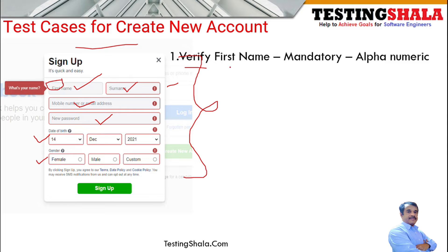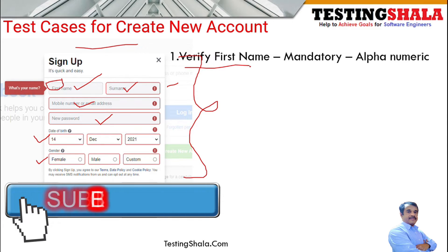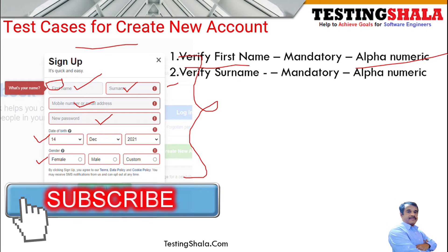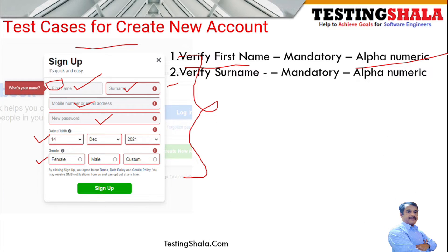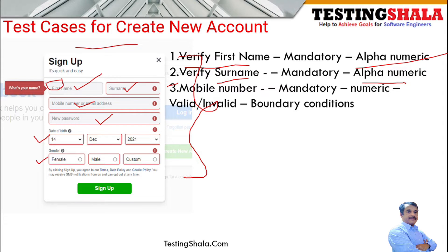For the first name field, we should verify that it is a mandatory field, and this field can take alphanumeric values — that is the first validation you need to make. The second validation is for surname: again, surname is also a mandatory field and can also take alphanumeric values.